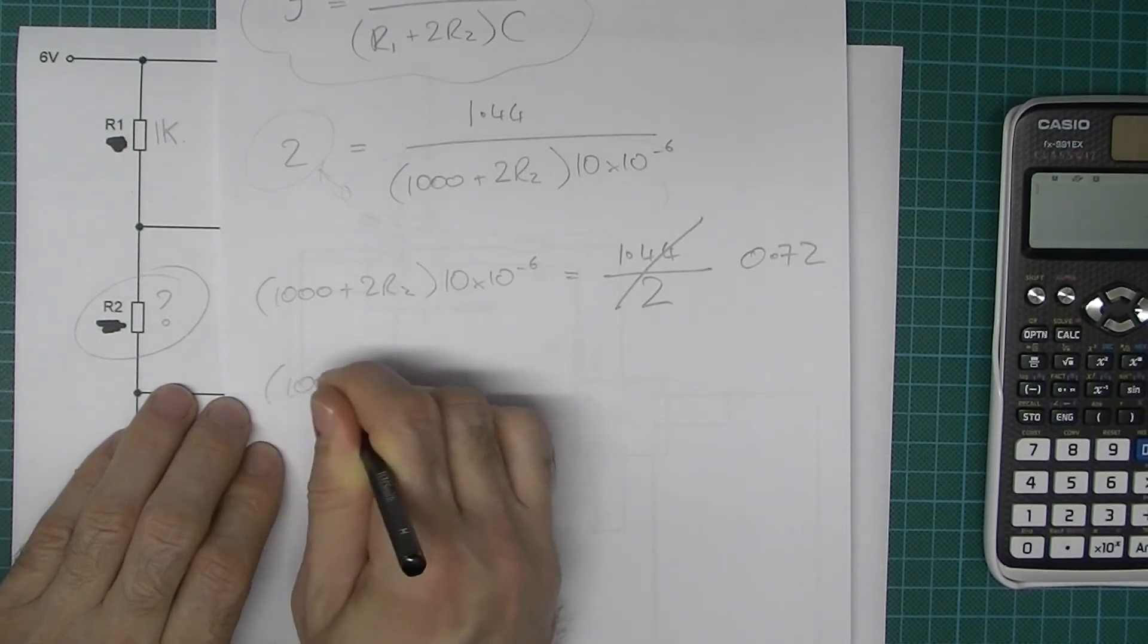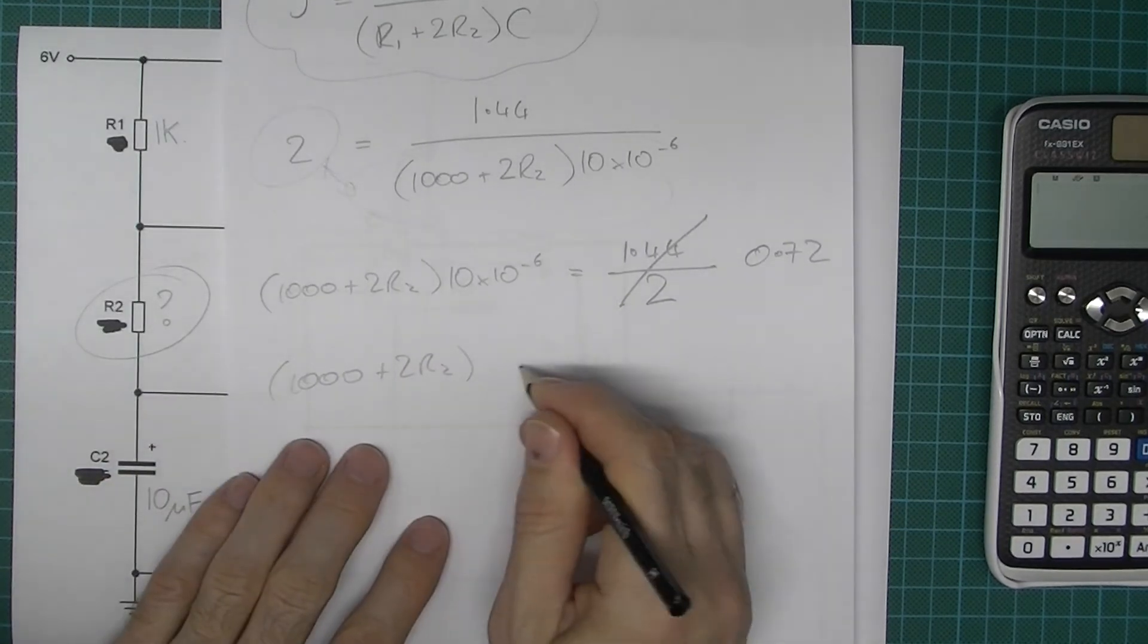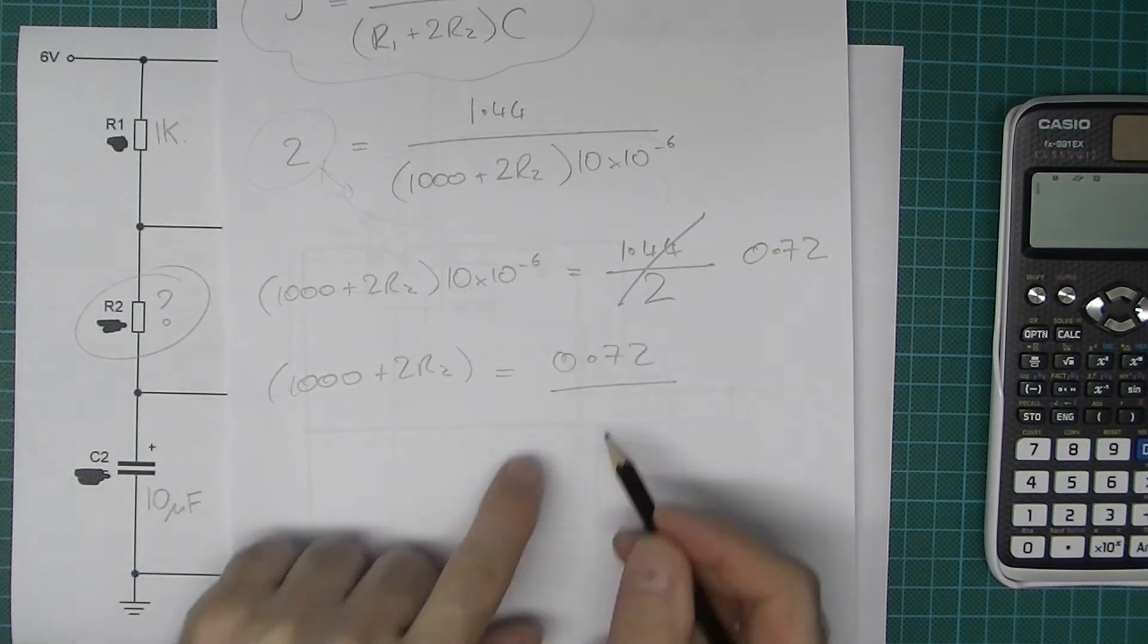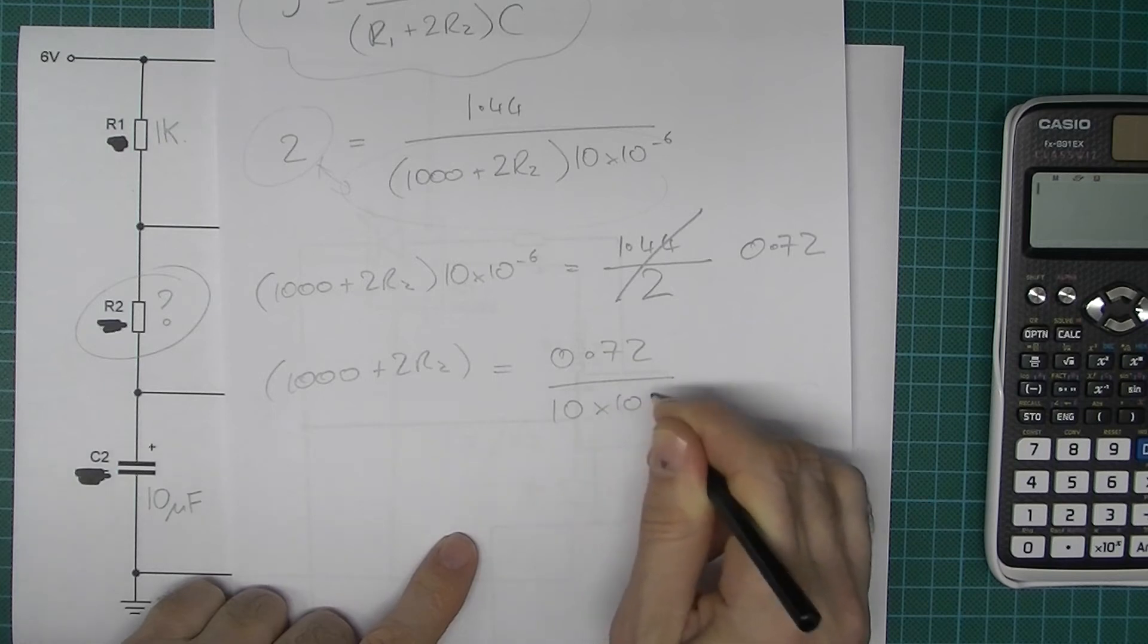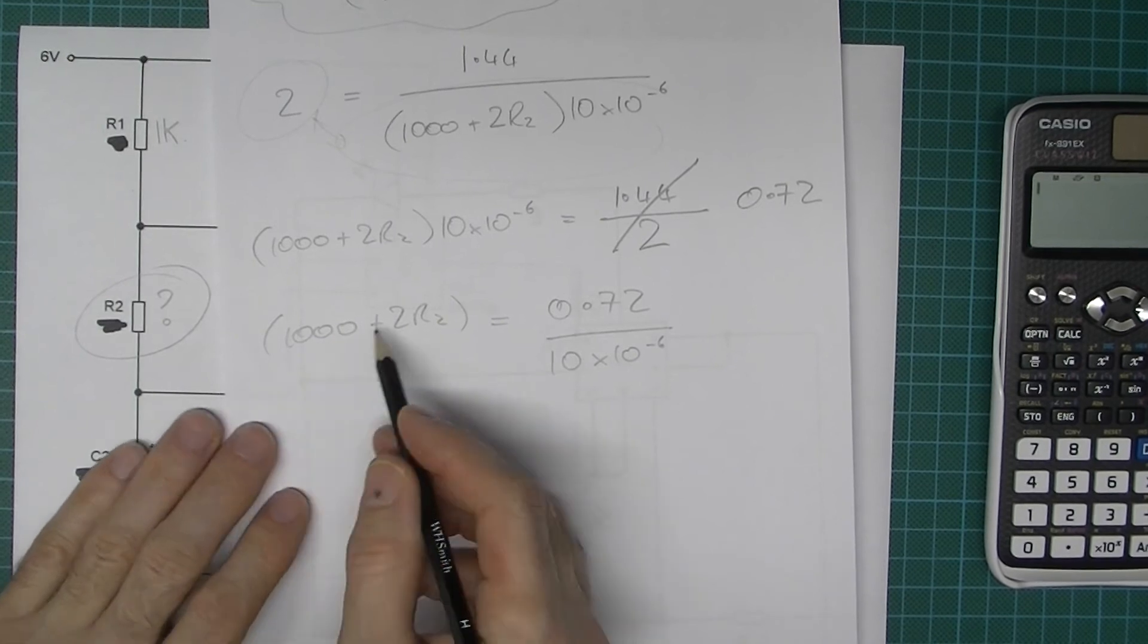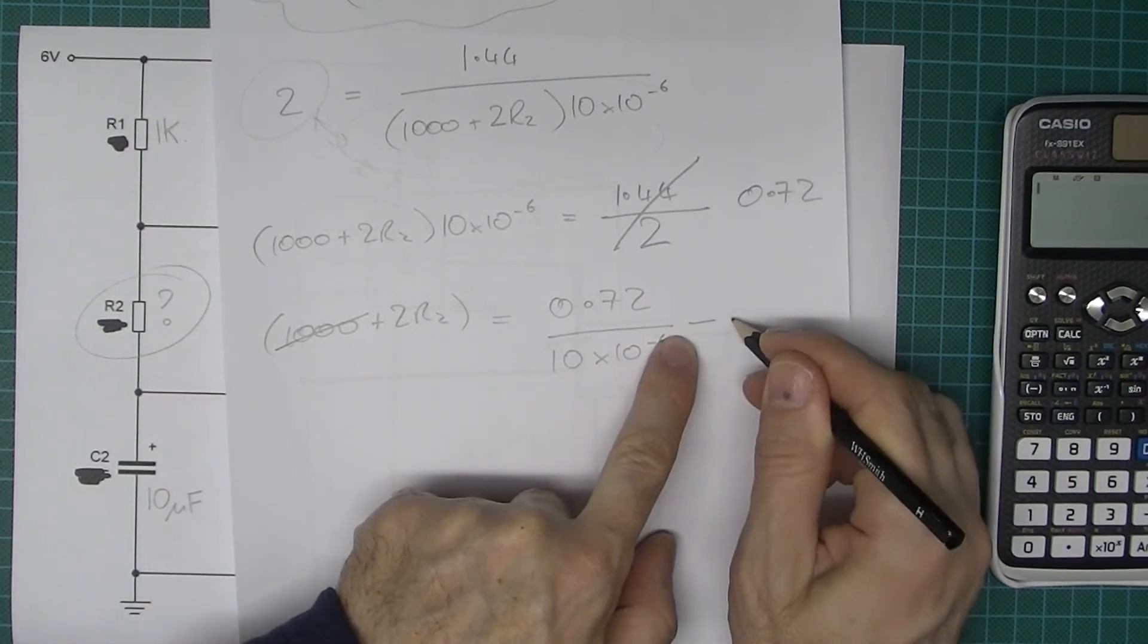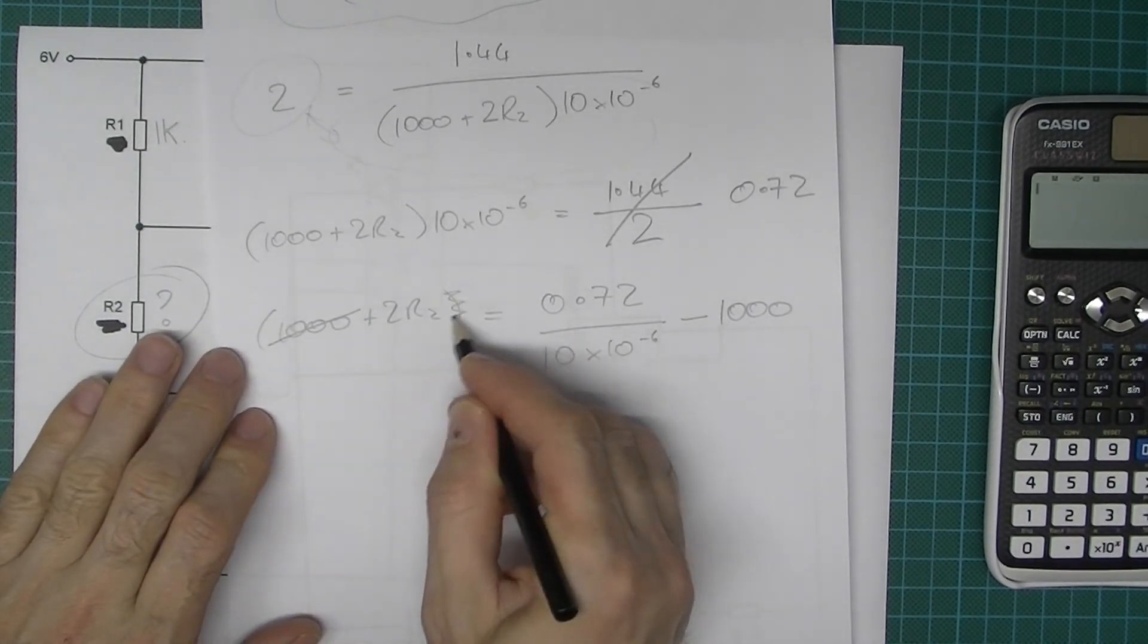So 1000 plus 2 lots of R2, actually I don't need the brackets there but I've got them anyway, now equals 0.72 over, so because we divided this side by 10 times 10 to the minus 6 we also have to divide this side by the same 10 times 10 to the minus 6. And then I want to get rid of this from 1000 so let's get rid of that. So I'm going to subtract 1000 from this side, so I need to subtract 1000 from this side. So what have we got left, I won't do that bracket there, so what have we got left, we've now got 2 R2 equals and then all of this.